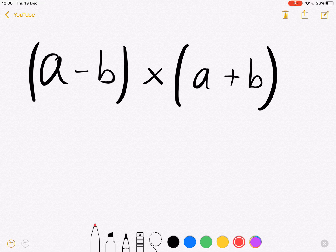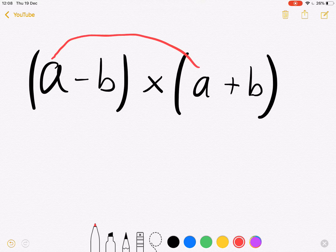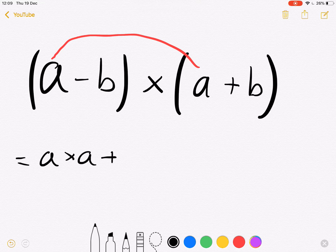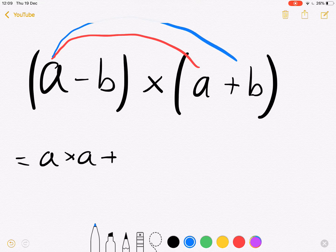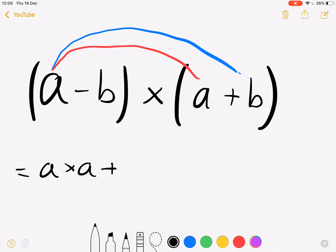For example, as you would with normal brackets, we do a × a. So this is equivalent to a × a, plus then we're going to be doing a × b.